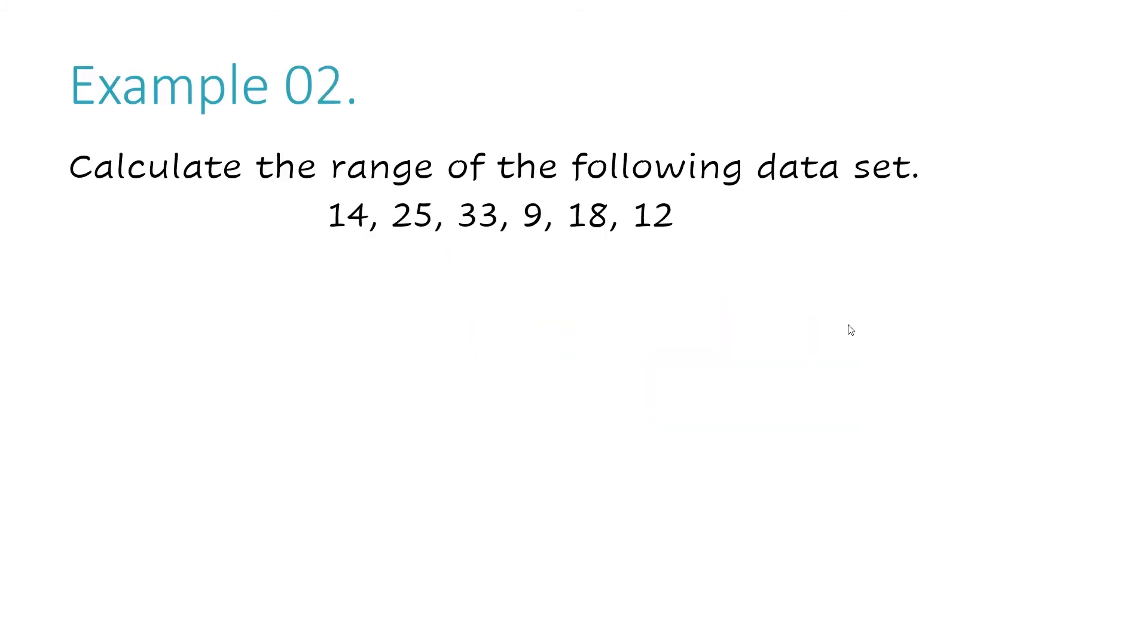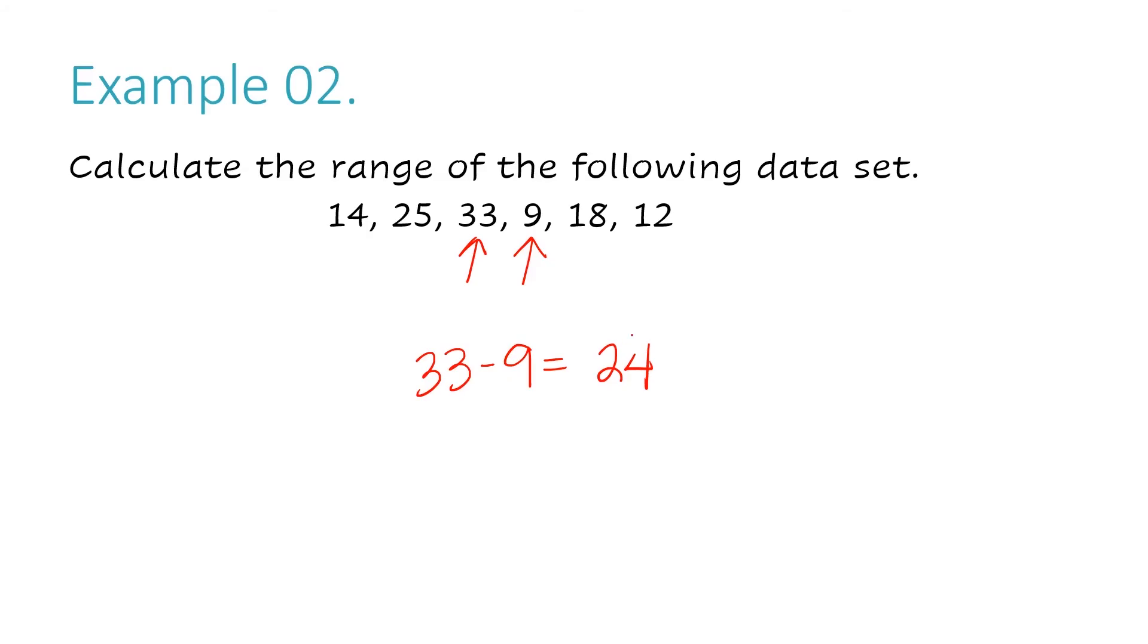Let's move on to example number two. Calculate the range of the following data set. My largest number is 33. My smallest number is nine. I need to subtract these two. The largest number goes first. The smallest number goes second. And when I subtract, I get my answer, and my answer is the range. Whenever I have a number and it's nine, and I'm subtracting something by nine, I like to round. Let's say I took the number 33 and I subtracted 10 from it. I know that would give me 23. But I didn't really need to subtract 10. I only need to subtract nine. So I know that 23 was a little bit off. It's not actually the correct answer. So I'm going to actually add one to it, and I know my answer is 24. So that's how I subtract nine in my head. So the answer to example number two is your range is 24.